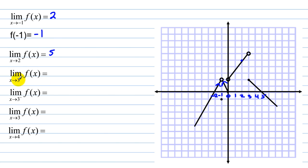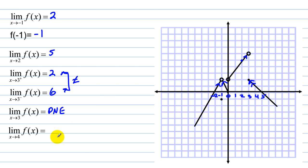The limit as x approaches 3 from the right: approaching 3 from the right gives a value of 2. The limit as x approaches 3 from the left: approaching from the left we are up around 6, so that value is 6. Since the right-hand and left-hand values do not equal each other, the limit as x approaches 3 in general does not exist. Finally, the limit as x approaches 4 of f(x): the function value is 1, and the graph is approaching that same value of 1.